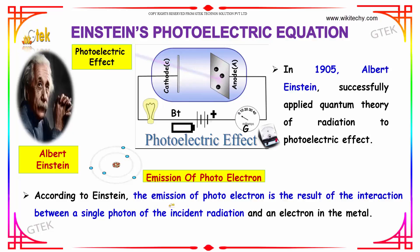According to Einstein, the emission of photoelectron is a result of interaction between a single photon of the incident radiation and an electron in the metal.